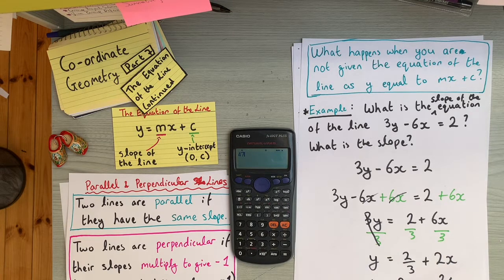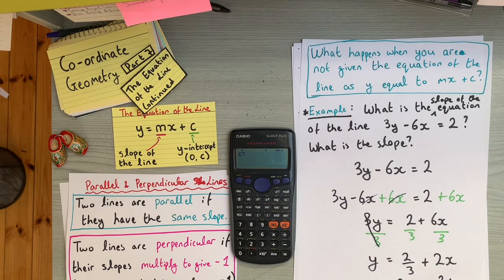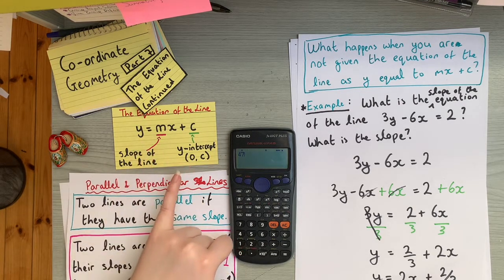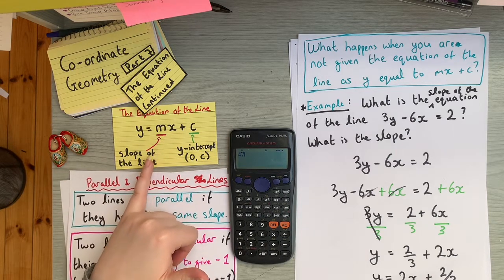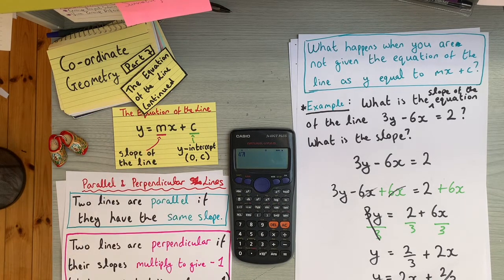If you're given a random equation of a line and asked to find the slope or y-intercept, rearrange it using the balancing method to get y by itself. As long as you keep it balanced, this is completely valid. The most important thing to take from this video: the coefficient of x is the slope, and the constant is the y-value of the y-intercept — and the equation must be in terms of y alone, not 3y or 2y.